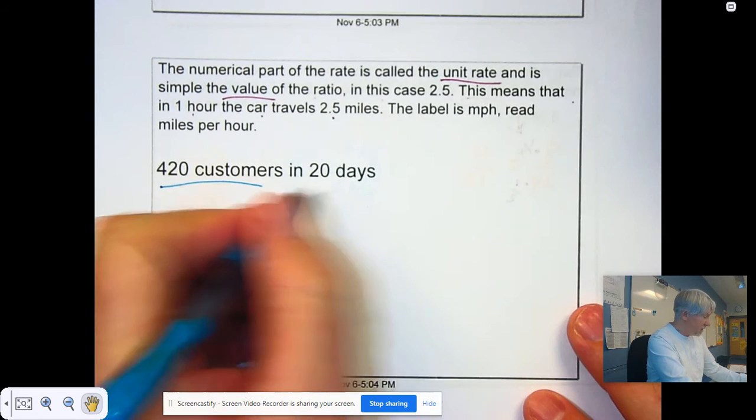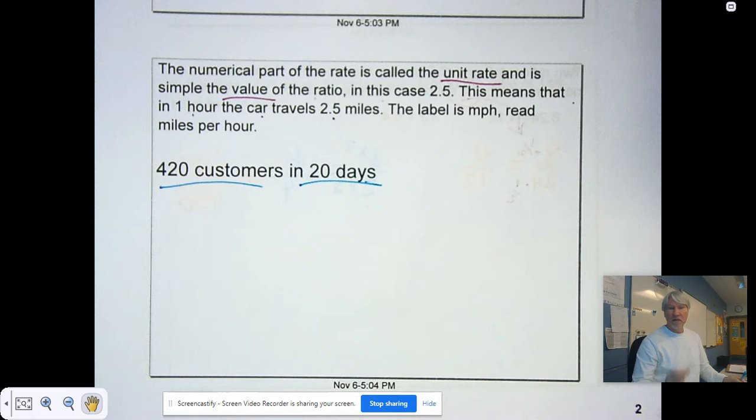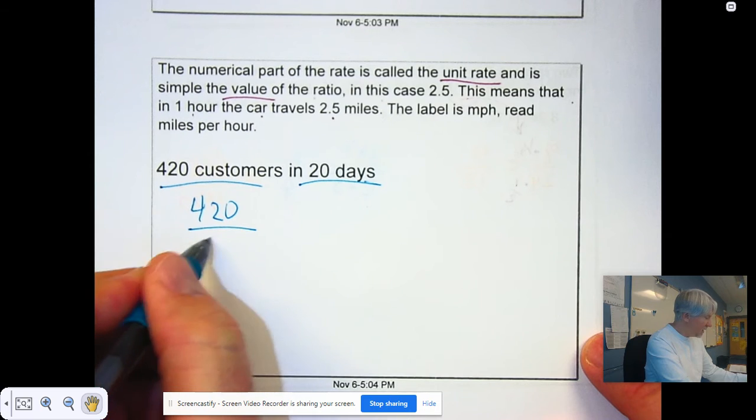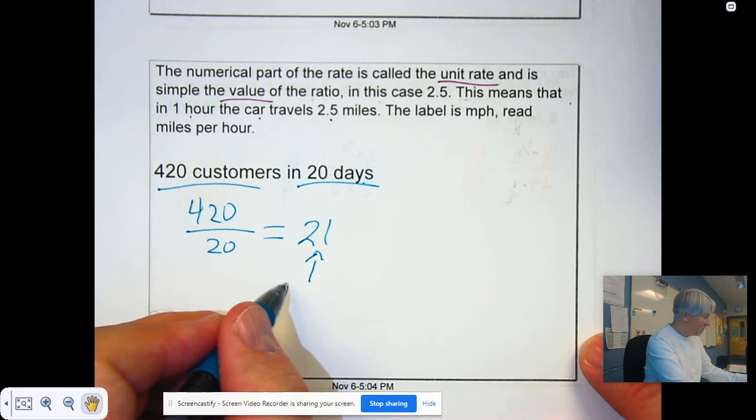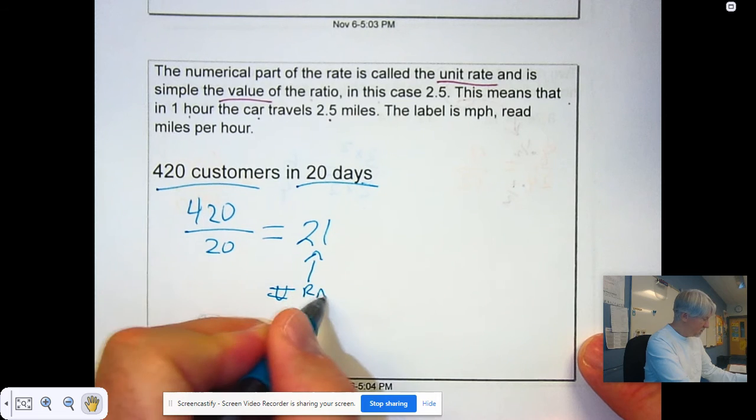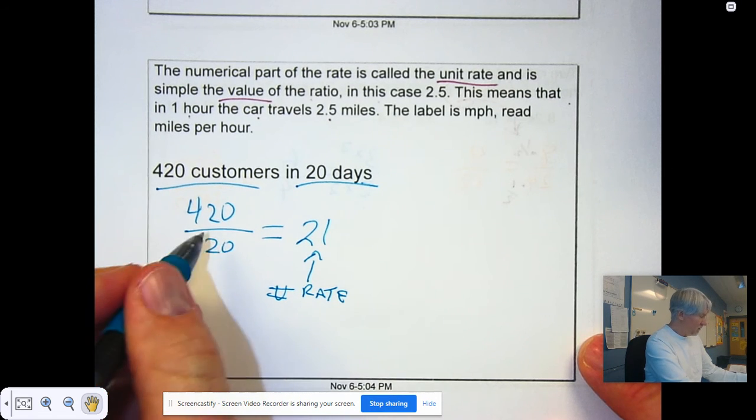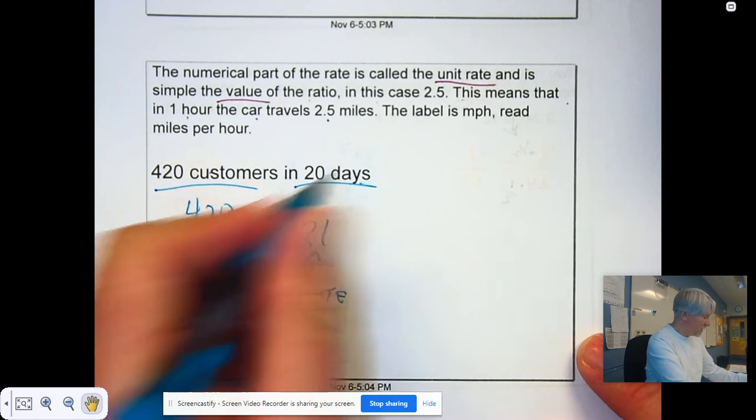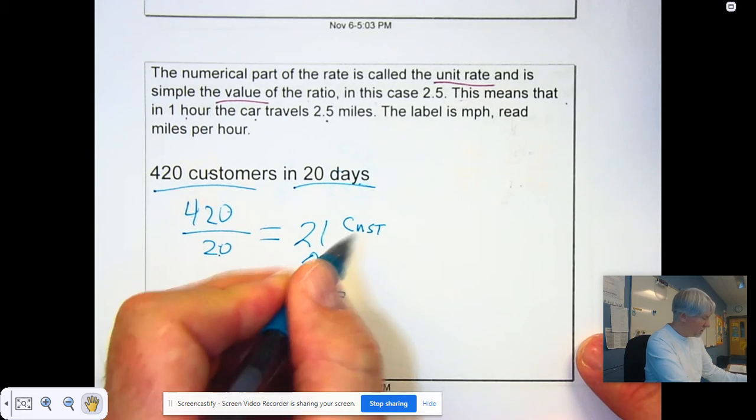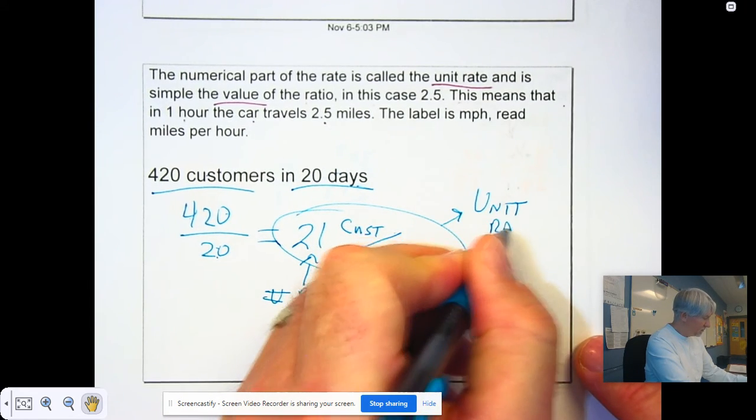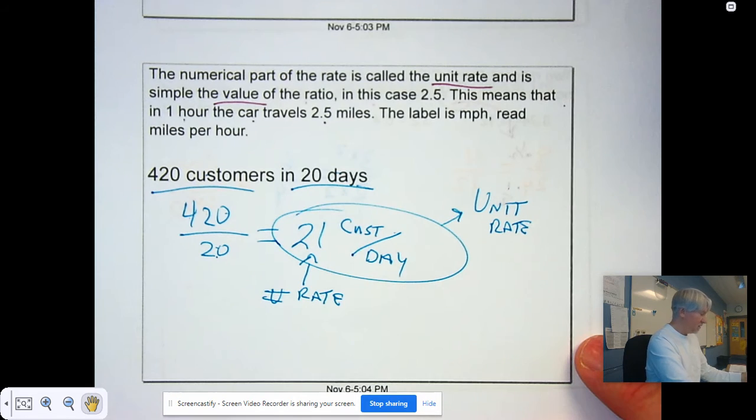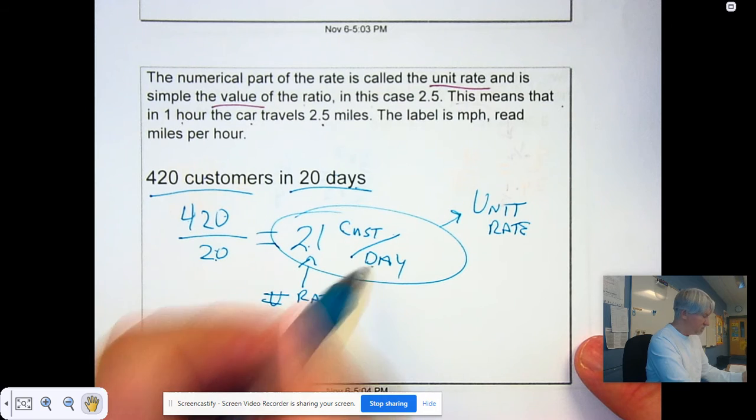So, if I have 420 customers in 20 days, take a moment, calculate the unit rate and label. You took 420, and you divided that by 20. So, that gives you 21. 21 is the rate. Now, 420 divided by 20 was customers divided by days. So, that's customers per day. So, that, all together, is the unit rate. Unit rate, 21 customers per day.